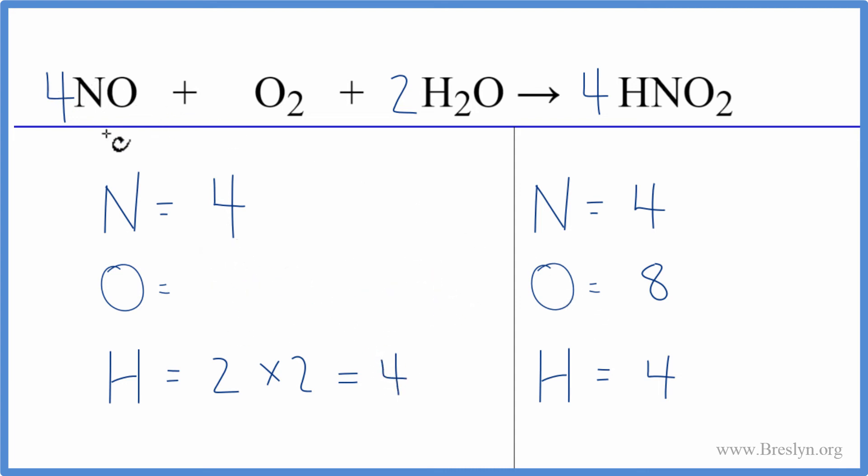We have 1 times 4, that's 4, plus the 2 here, plus 1 times 2, that's 2. 4 plus 2 is 6, plus 2 is 8, and we're done. This equation is balanced.